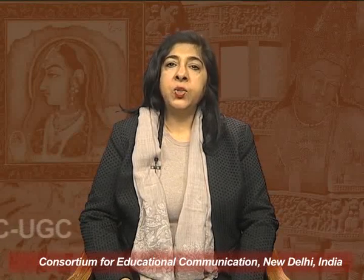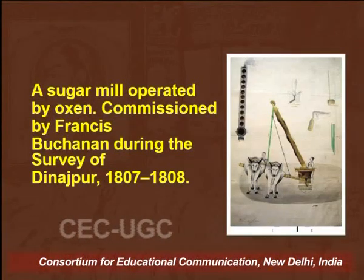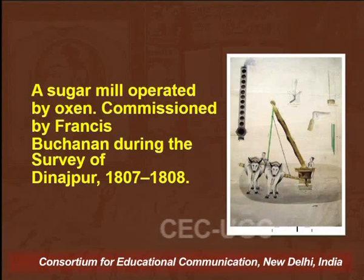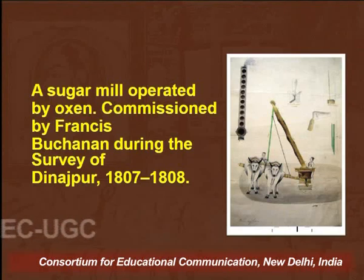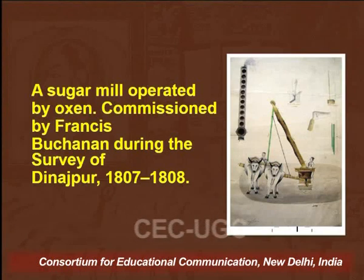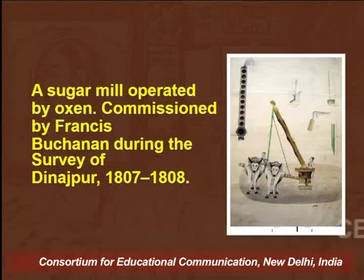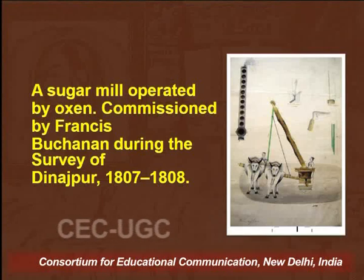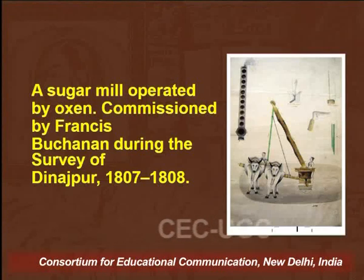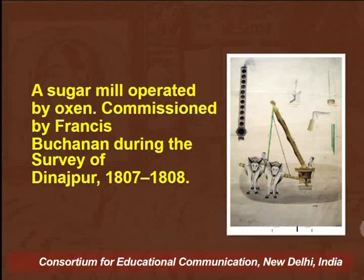As you can see in one of these paintings — the painting of a sugar mill operated by oxen — there is a different kind of image visible compared to the ones discussed earlier when we were discussing Mughal miniature art, when there was lavish use of gold, silver as well as vibrant colours.